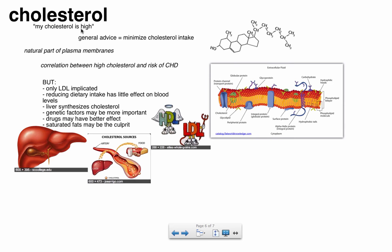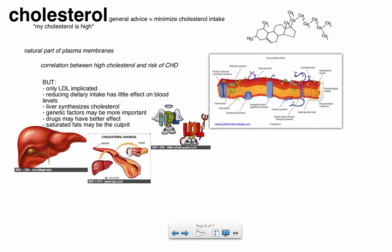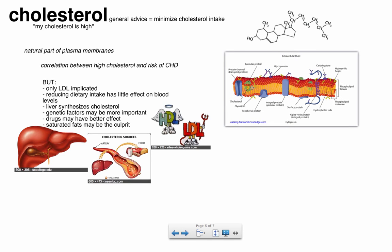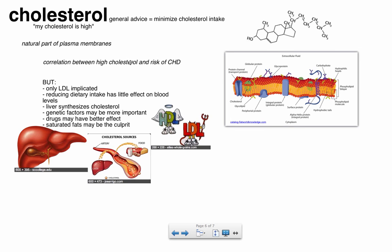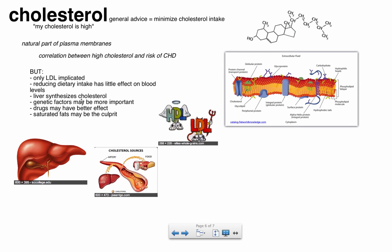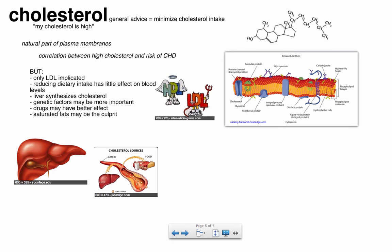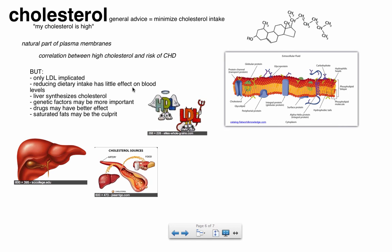One final issue: cholesterol. You've probably heard your parents say their cholesterol is high. General advice is to minimize cholesterol intake, but many people don't know that cholesterol is actually an important component of plasma membranes — your cell membrane and all internal membranes. You actually need it. However, there seems to be a high correlation between high cholesterol and risk of coronary heart disease. There are two types: HDL cholesterol and LDL, and it appears that LDL is the one really implicated.